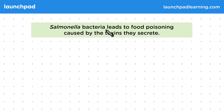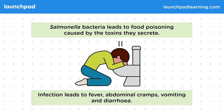Salmonella bacteria leads to food poisoning caused by the toxins they secrete. Infection leads to fever, abdominal cramps, vomiting, and diarrhoea.